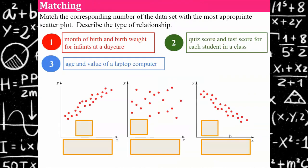I would like you to take what we just discussed and see if you can apply it. I've given you three different actual real world scenarios and three different types of scatterplots. I would like you to match up which number graph is each one and then identify what type of relationship is shown in the graph. Go ahead and pause. Come back and hit play when you're ready to check your answers.